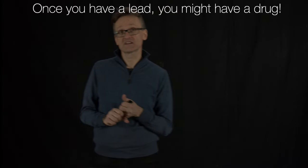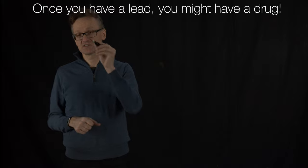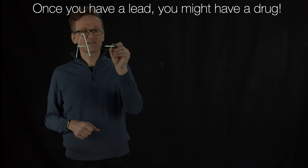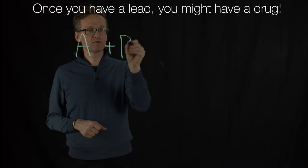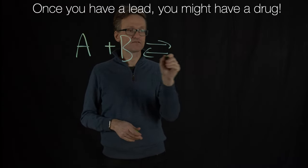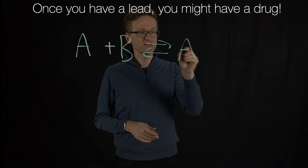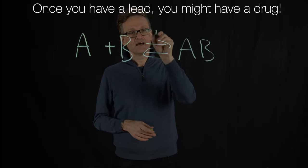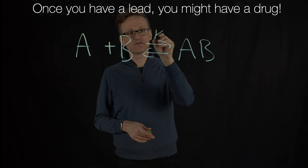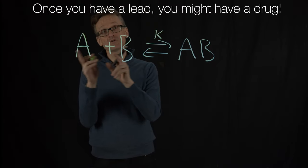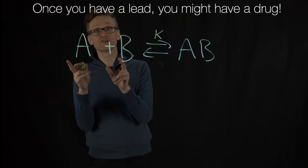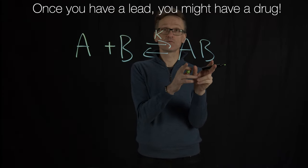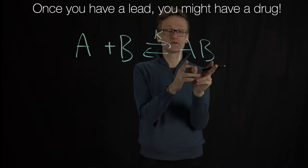The binding affinity basically measures the chemical equilibrium: A plus B versus AB. And if K here is very low, that just means that most of the reaction is going to be on that side — it's only going to be a very small fraction of them that are bound.